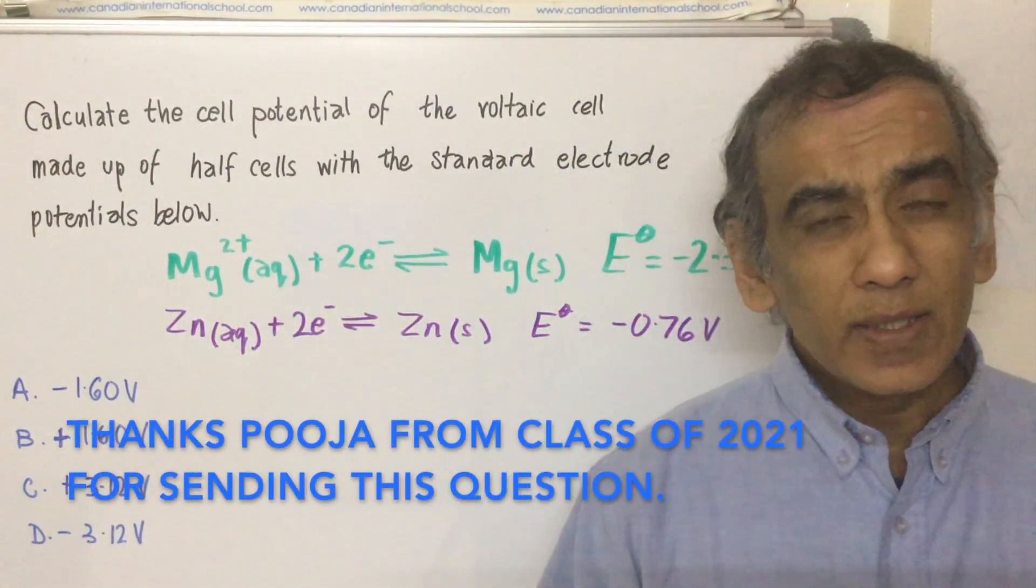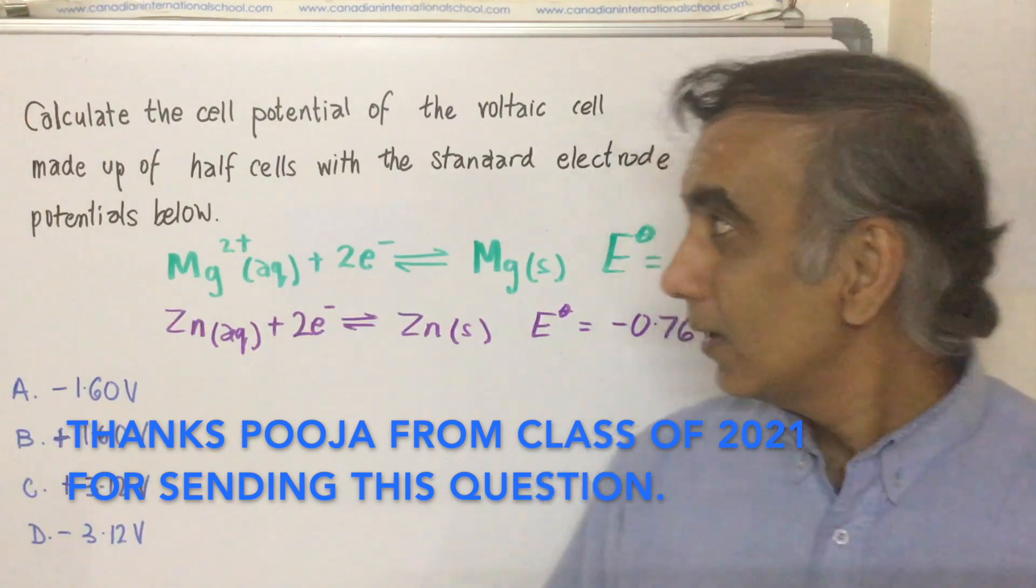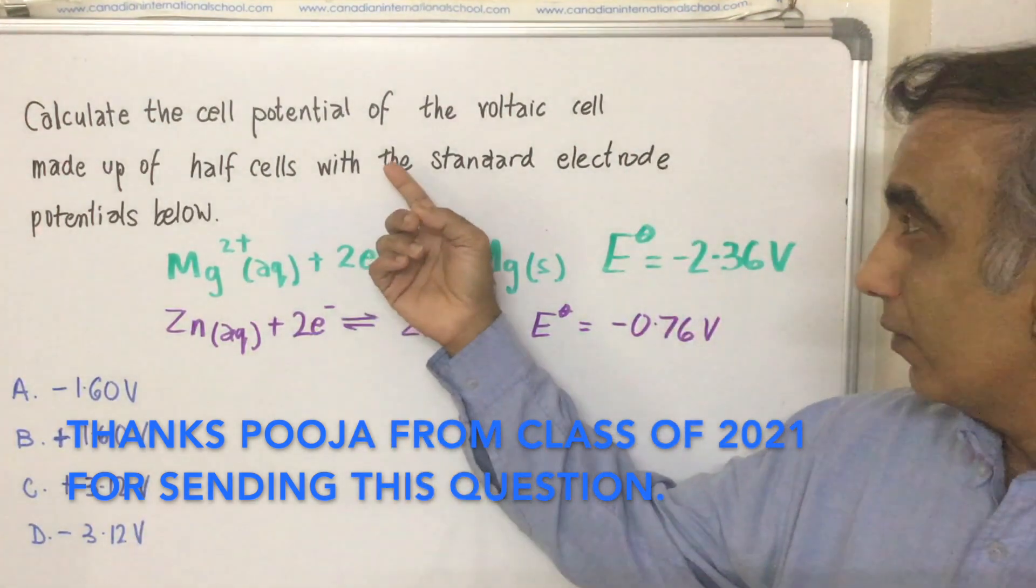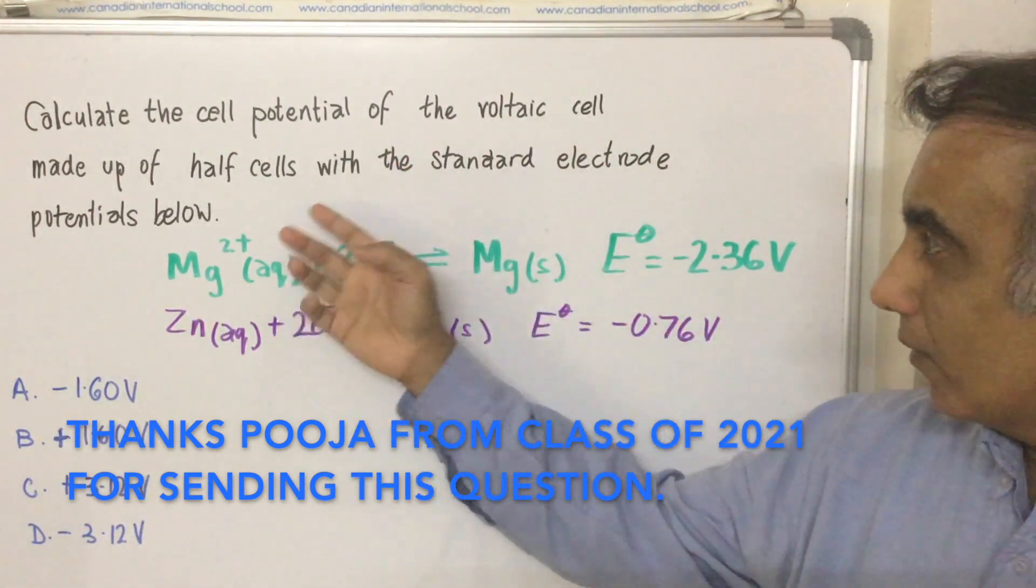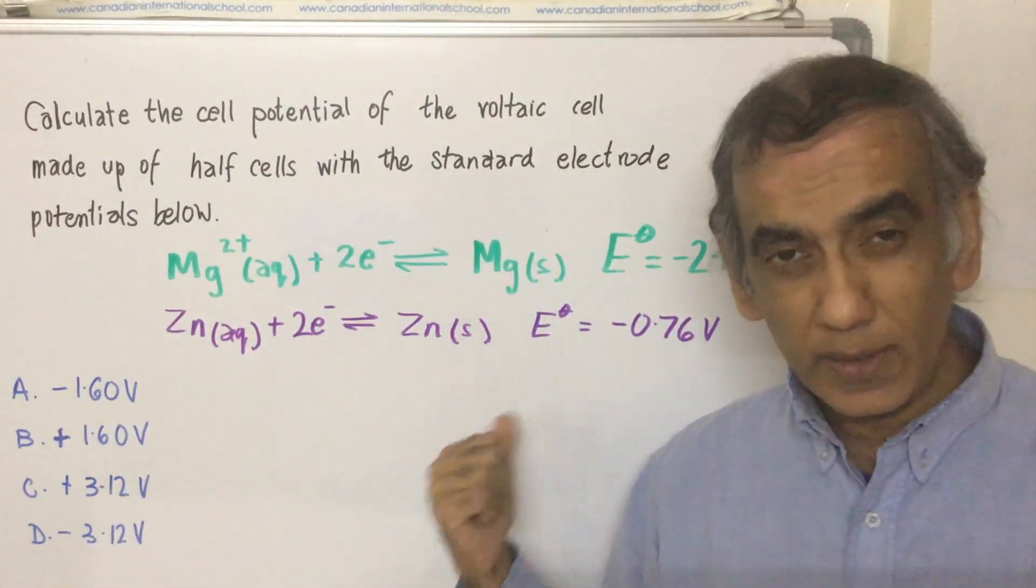Hello and welcome as we consider yet another multiple choice question for IB chemistry. Calculate the cell potential of the voltaic cell made up of these two half cells with these two standard electrode potentials.